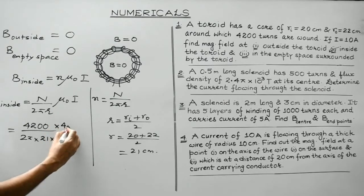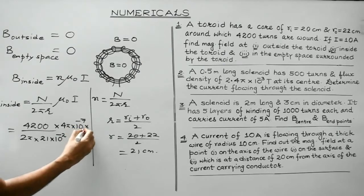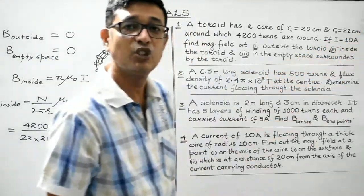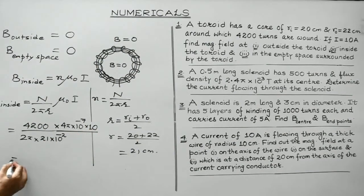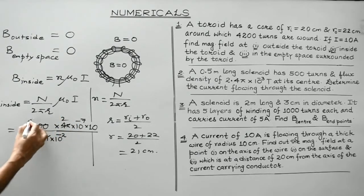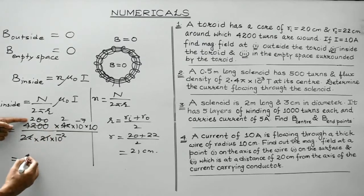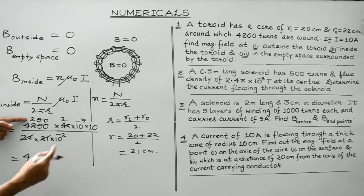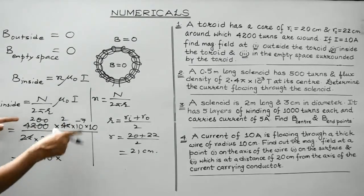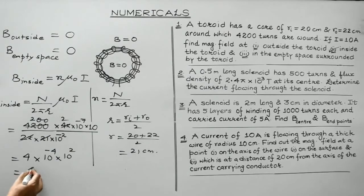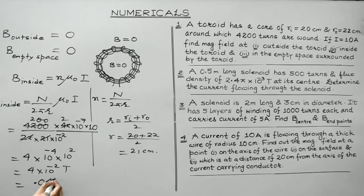μ₀ is 4π × 10⁻⁷, and the current is 10 Ampere. Solving: 2π cancels, leaving N = 4200 and the denominator 2 × 21 = 42. We get 2 × 2 = 4, with powers 10³ × 10⁻⁷ × 10² = 10⁻², giving 4 × 10⁻² tesla, or 0.04 tesla.